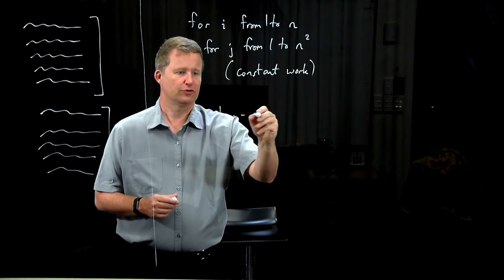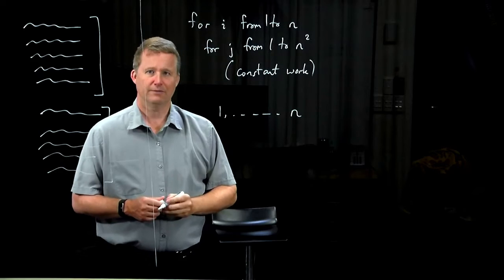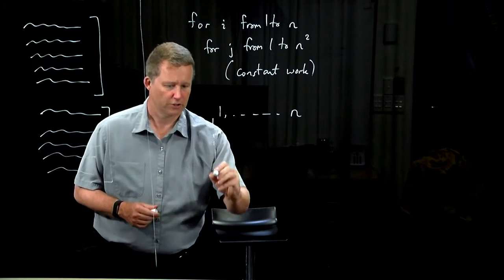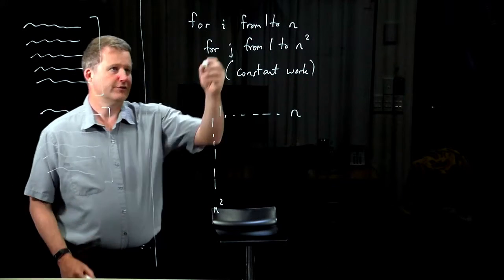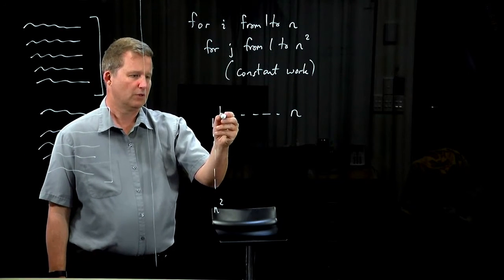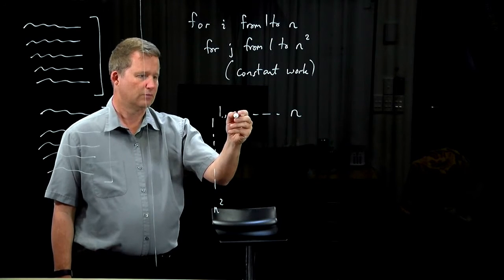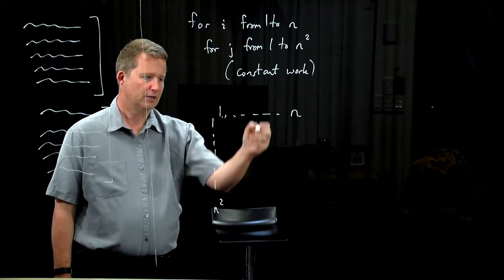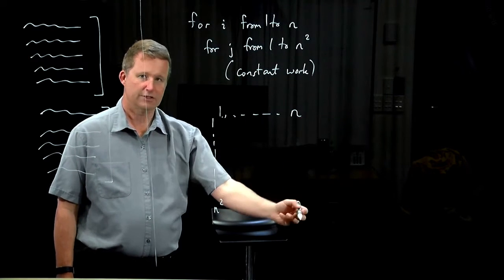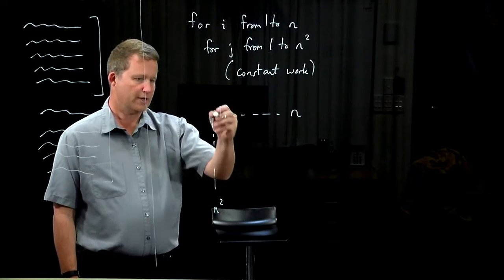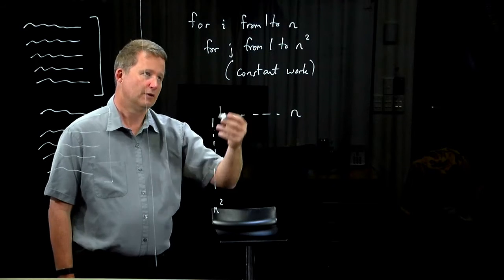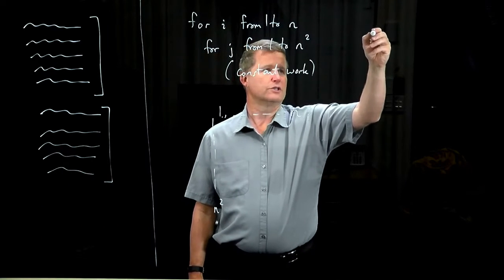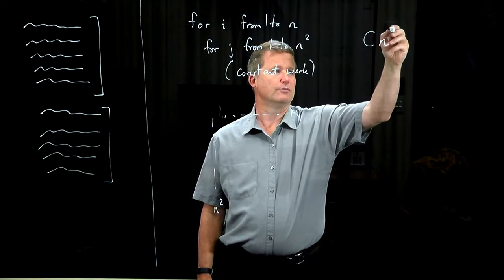Well, i goes from 1 through to n. j goes from 1 through to n squared. For every value of i, we run through all values of j before going to the next value of i. So the answer is clearly n squared times n. And the total amount of work is going to look something like constant times n cubed.